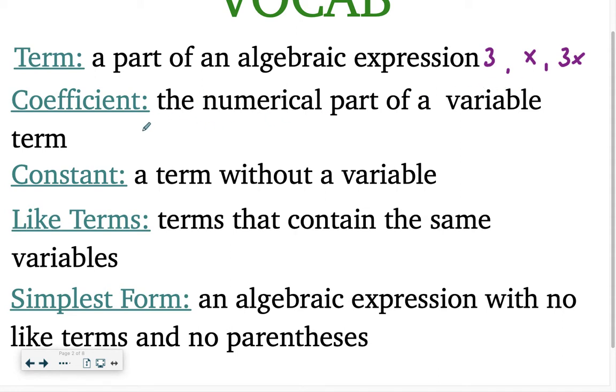A coefficient is the numerical part of a variable term. So that 3x, the coefficient is just the 3. A constant is a term without a variable, so just the number 3 on its own would be a constant. 3x would not be a constant.